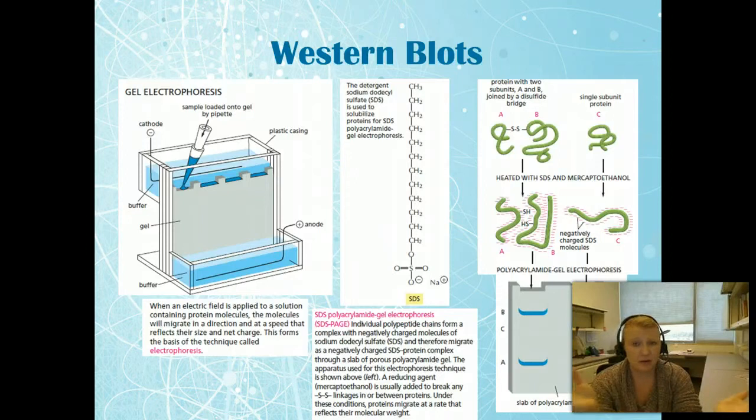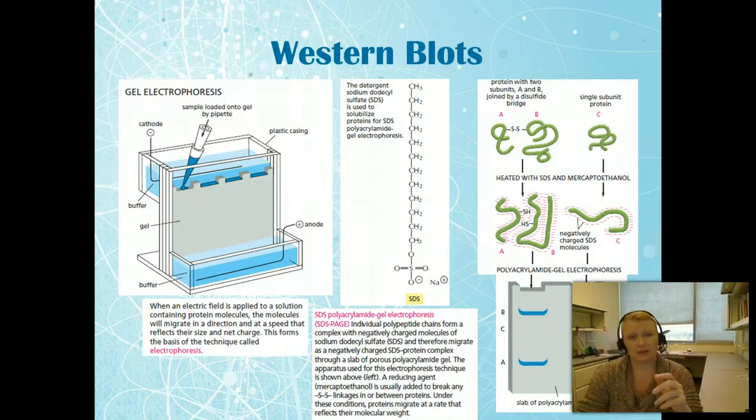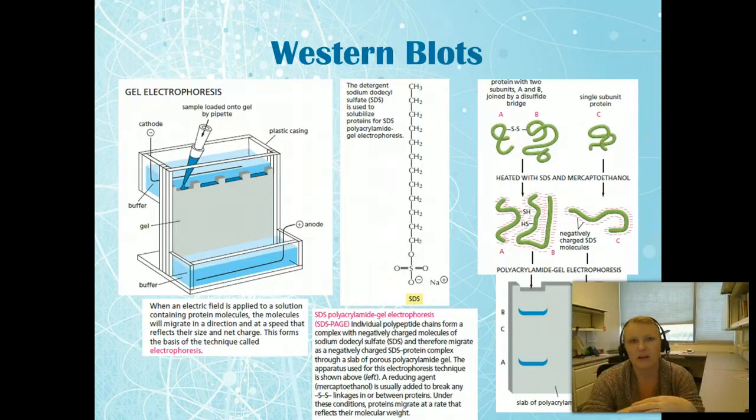Once we have purified proteins, another key thing we'll do to study proteins is a western blot. Western blots are a lot like regular gel electrophoresis, which you've done in many of your classes before where you've separated out nucleic acid sequences. Western blots we do the same thing but we separate out proteins.